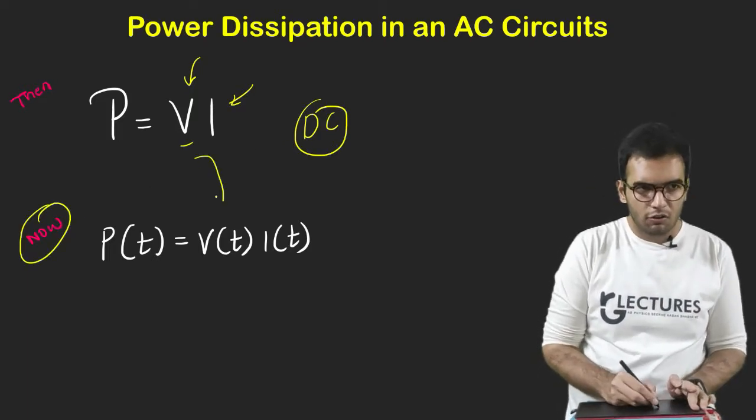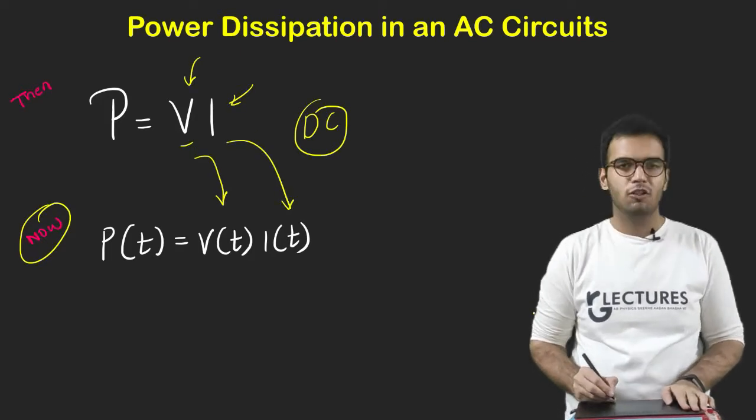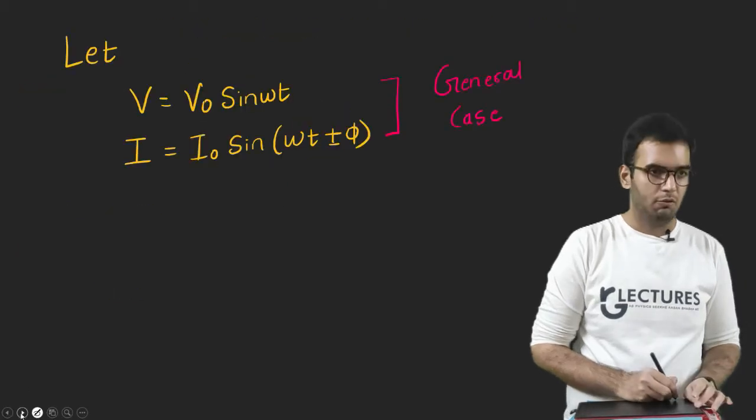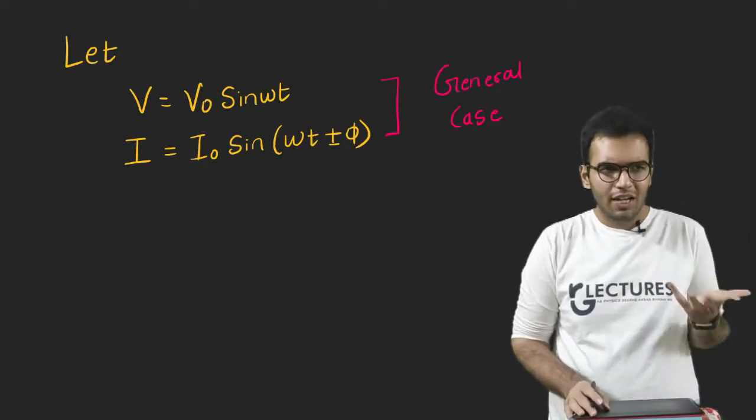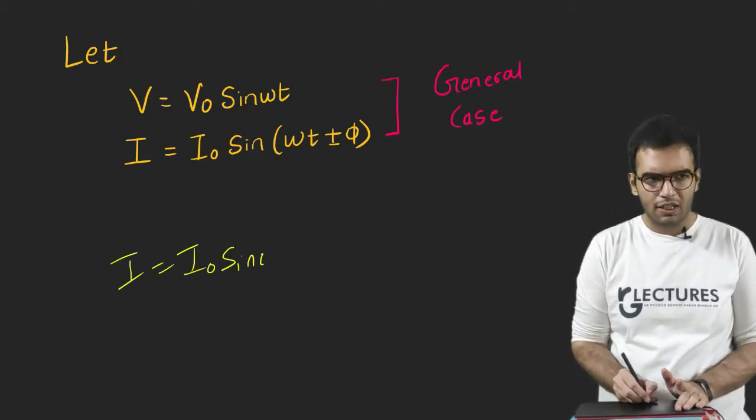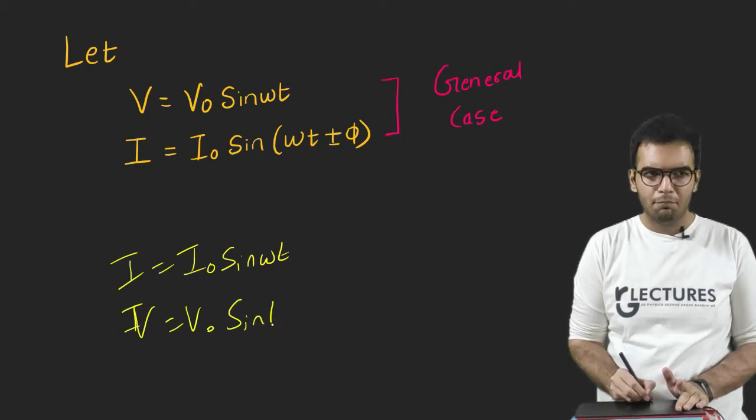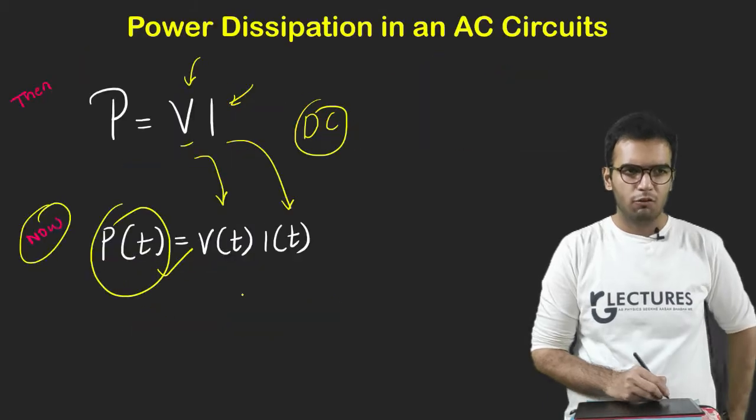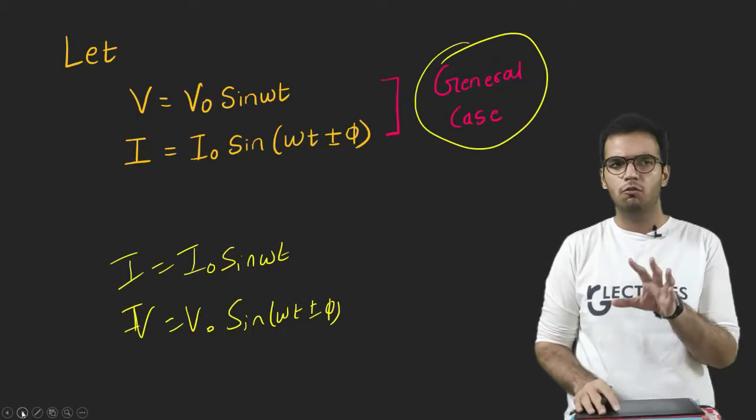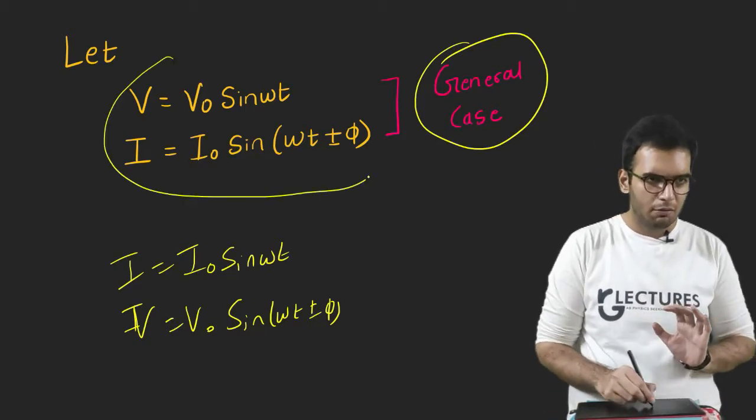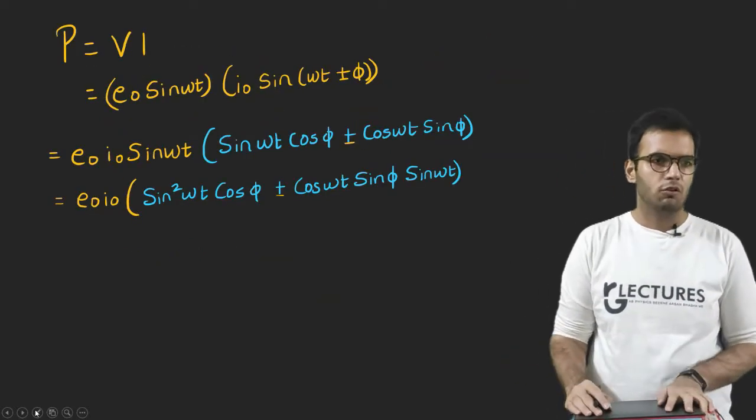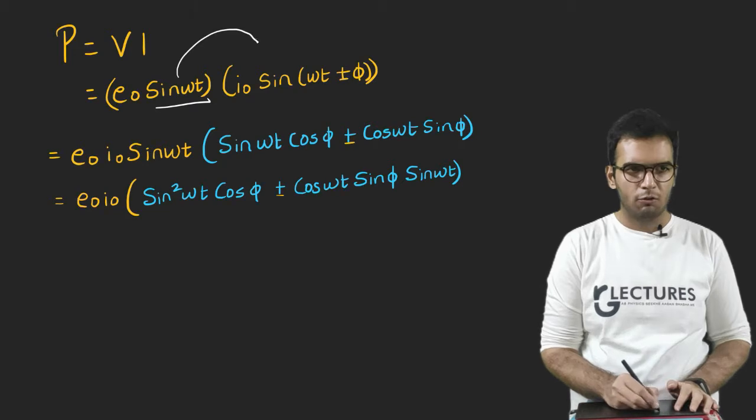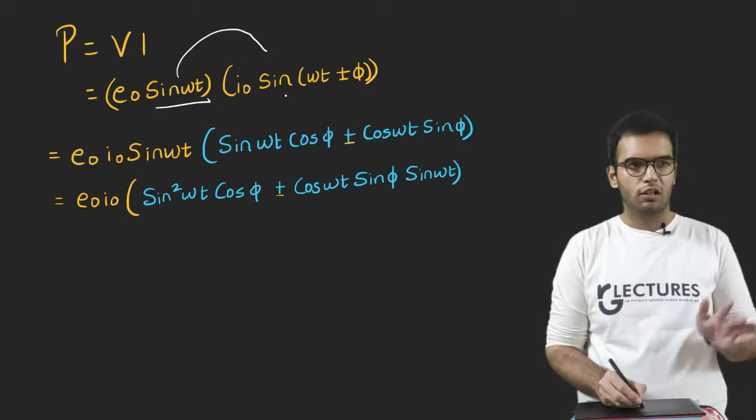We need to redefine a few things. You can consider anything. You can start with I equals I₀ sin(ωt) and consider V equals V₀ sin(ωt + φ), minus φ, anything you can take. Just we have to derive the general case. In general case, we consider there is a phase difference. In reality, if there is no phase difference, we will remove the term φ. So here I am deriving using these two terms. You can derive by any way you want.